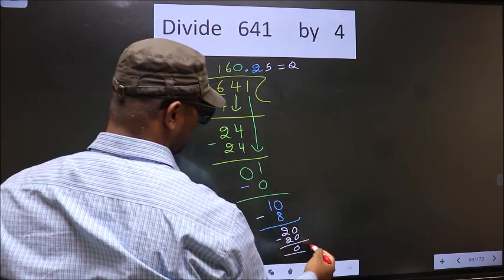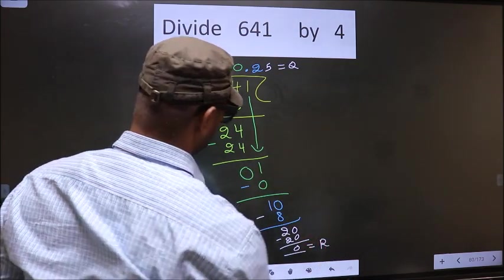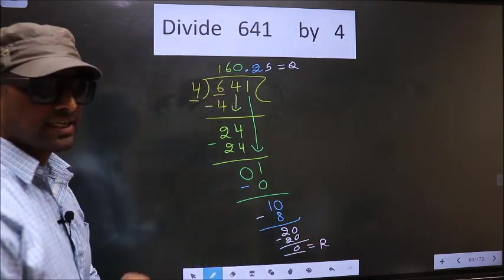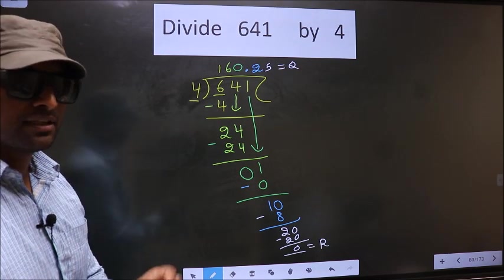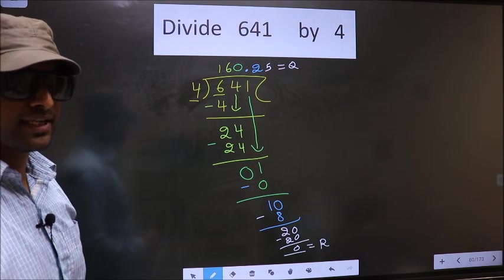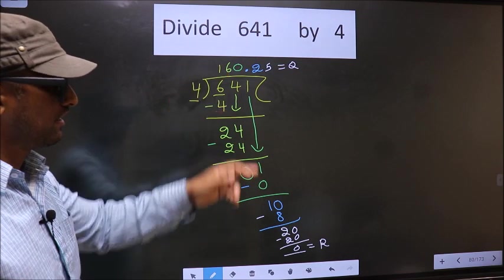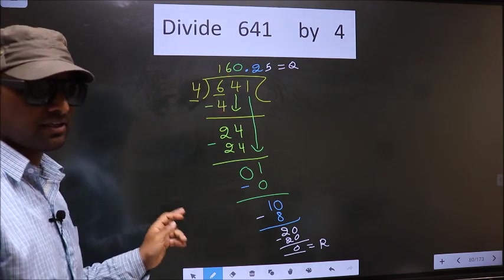This is our quotient and this is our remainder. Did you understand where the mistake happens? You should not do that mistake. Am I clear? Did you understand?